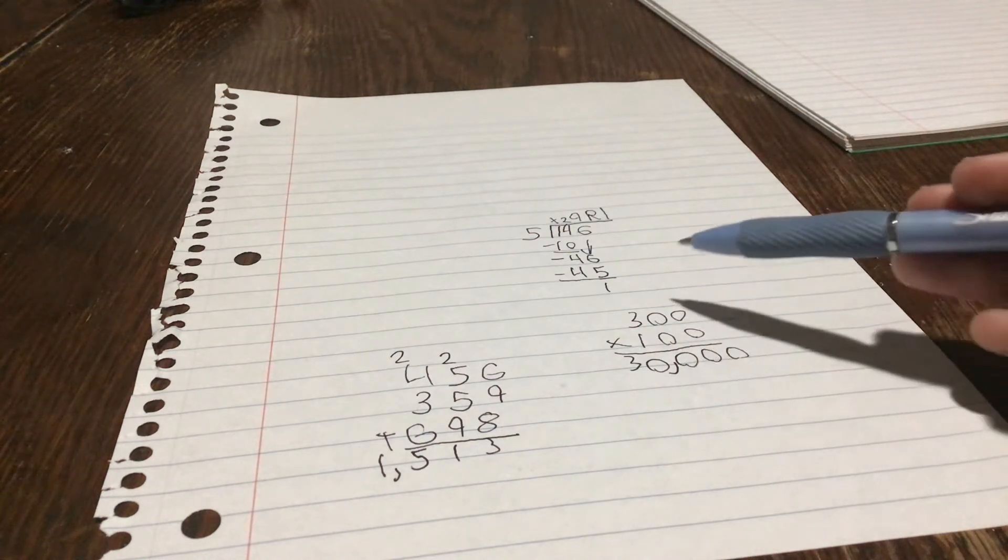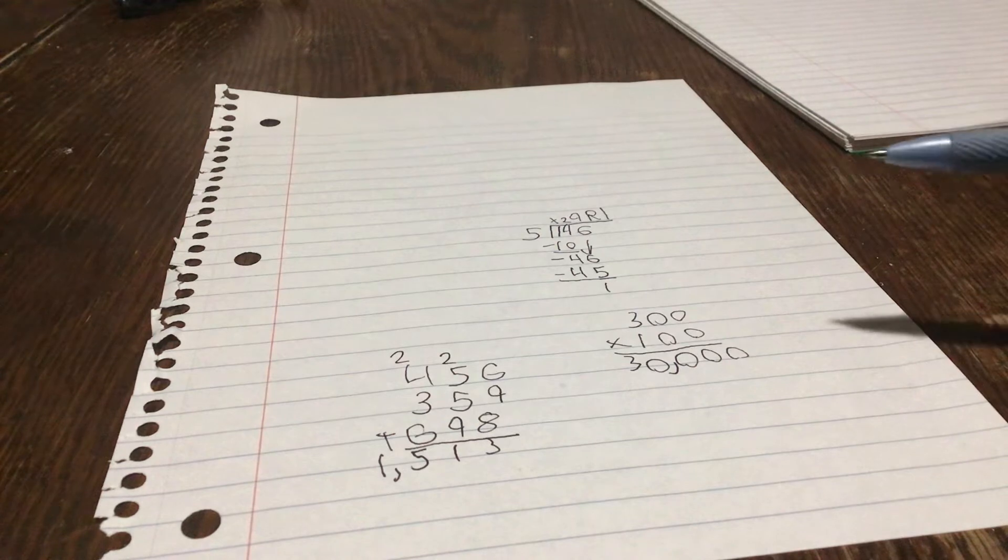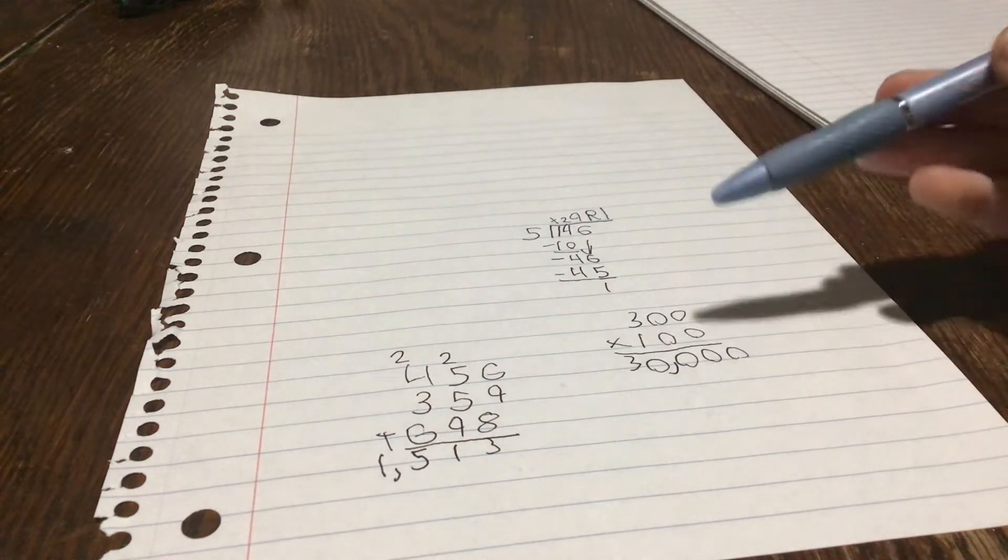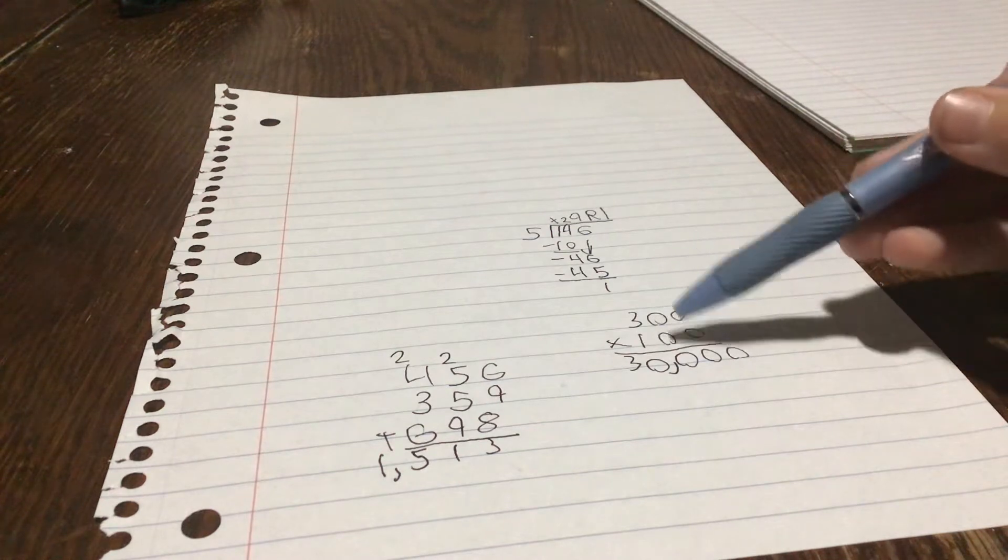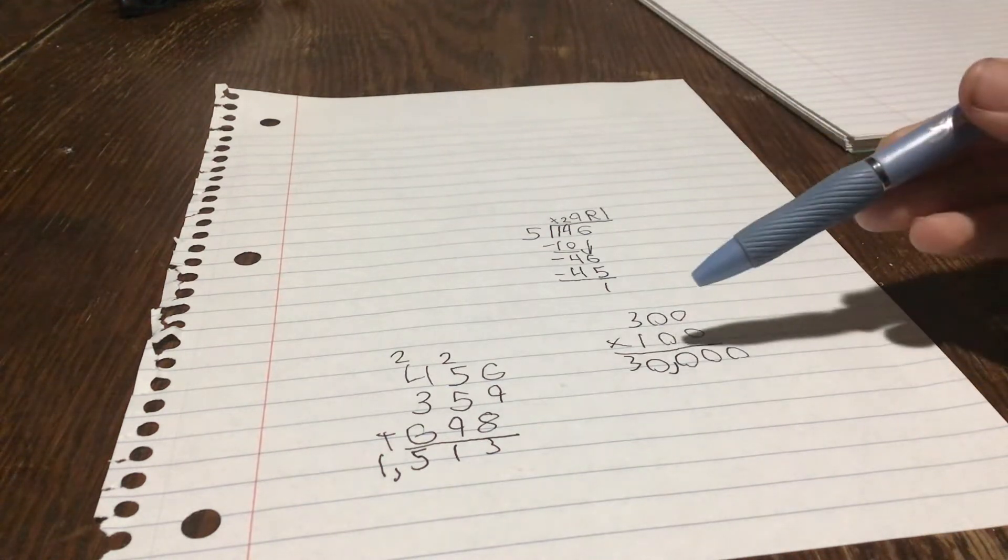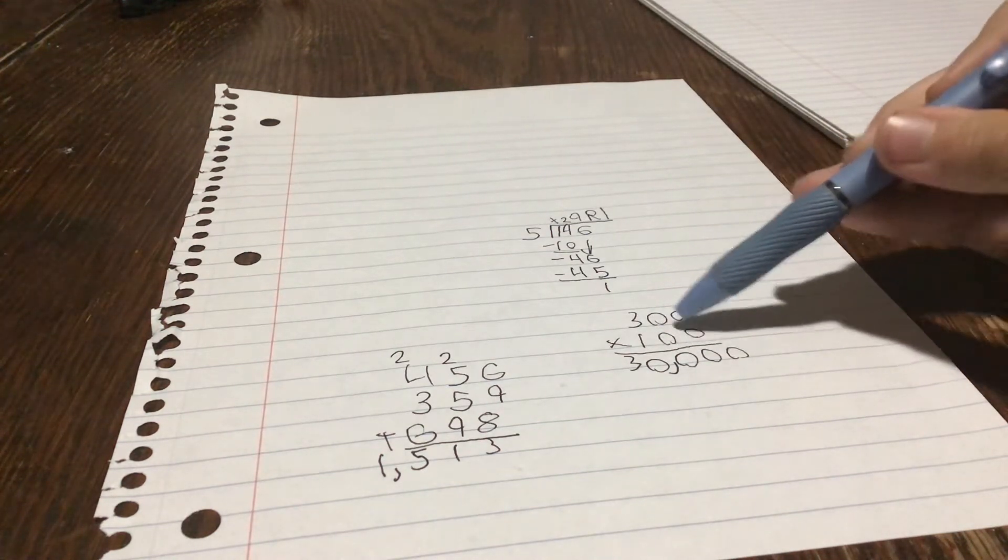Now first off is a trick. Let's do 300 times 100. It seems pretty hard, doesn't it? Well, you'd be wrong if you thought that. First of all, these four zeros, they're stupid, we don't care about them, they suck.